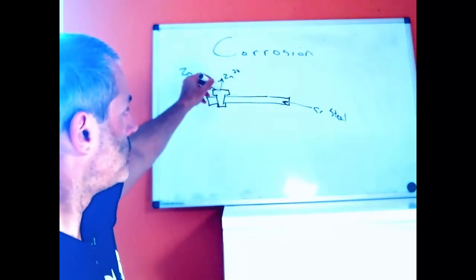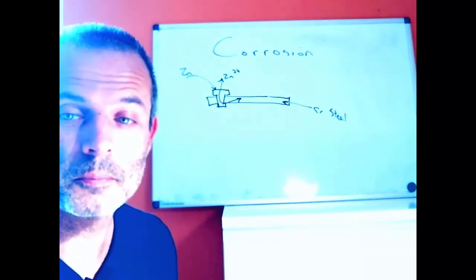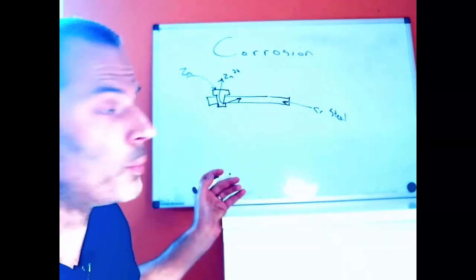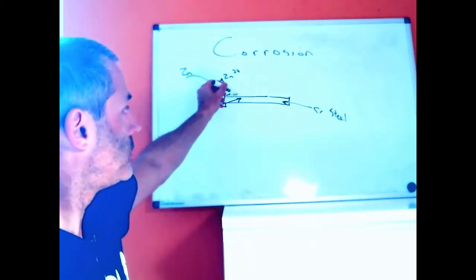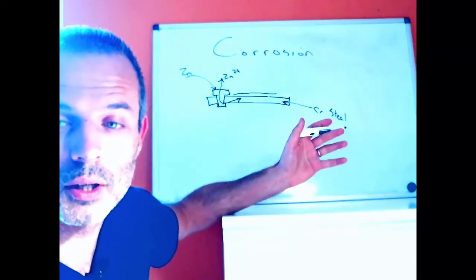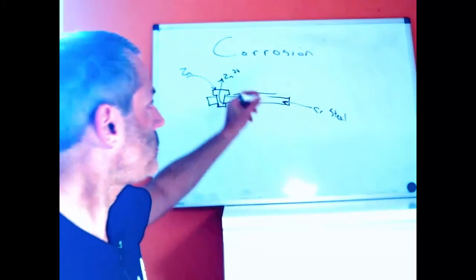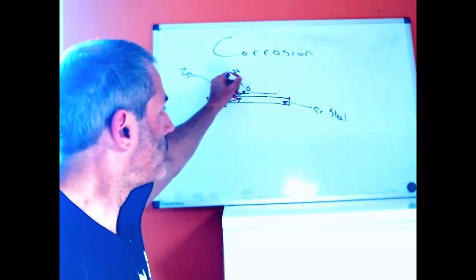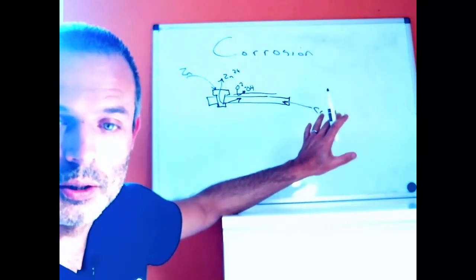That gives electrons to the rest of the material and they hang around until they can do something. If we have a little bit of water and salt on the surface — maybe it's part of your car and it rains on it — this part can do the reduction part of the reaction, typically the formation of hydroxide from oxygen. O₂ coming from the air reacts to form OH⁻, spread over a very large area, which is a doubly bad problem.